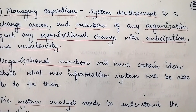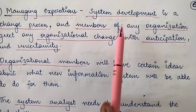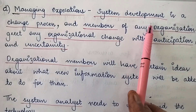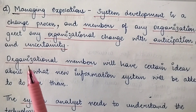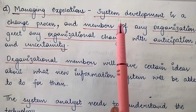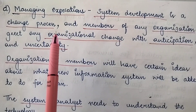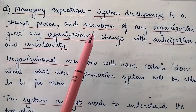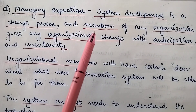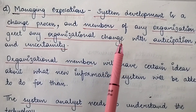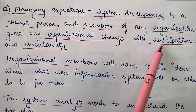The fourth category of interpersonal skills is managing expectations. During system development, the system analyst must know how to manage the expectations of the clients. System development is a change process — whenever a new information system is developed, it introduces change in the organization as the old system is replaced. Members of any organization greet organizational change with anticipation and uncertainty, unsure how well the system will work or how well they will be able to use it.